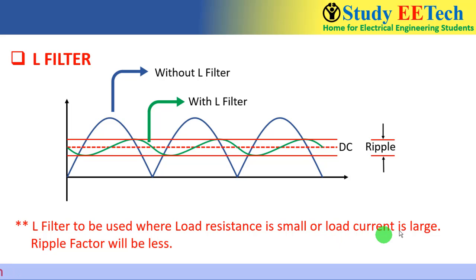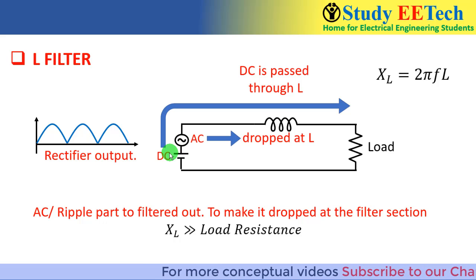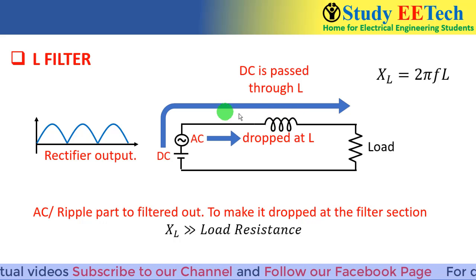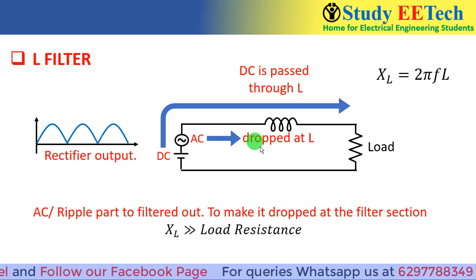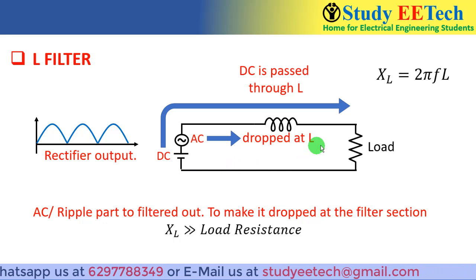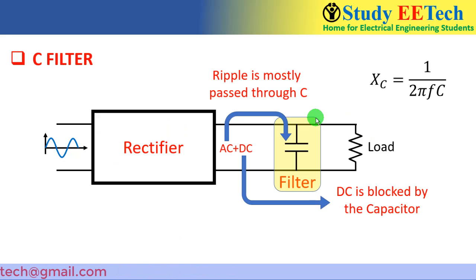The L filter should be used where the load resistance is small, or the load current is large — in that case the ripple factor will be less. The inductor is placed in the series path because it gives zero impedance to DC, allowing DC to pass. If the inductor were placed in the parallel path, DC would circulate through it and not appear at the load.